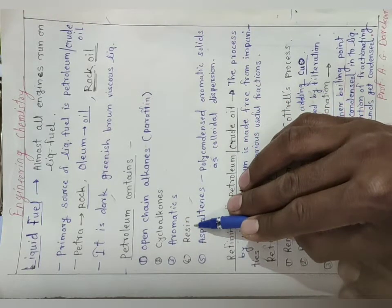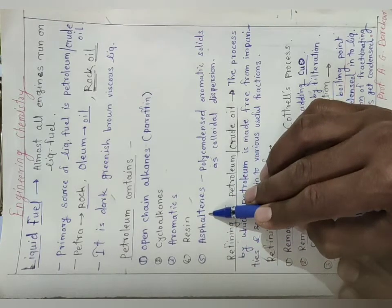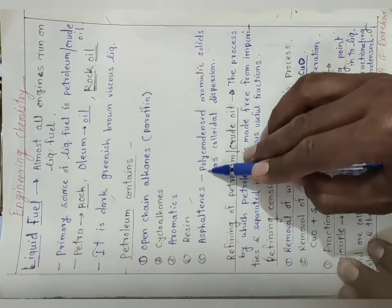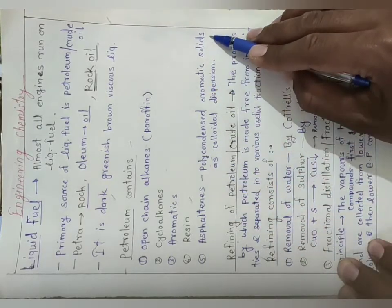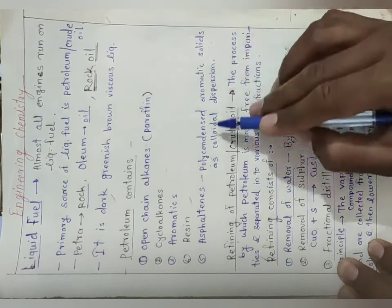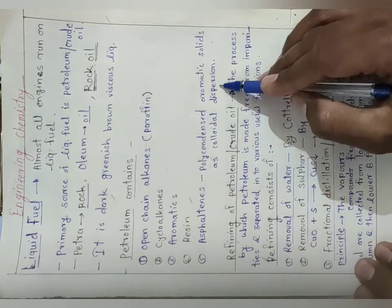It also contains resins, that is a polymeric compound present in it. Then last one present in petroleum is asphaltenes, that is poly-condensed aromatic solids present as a colloidal dispersion.